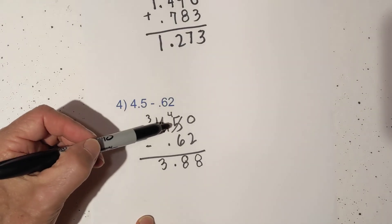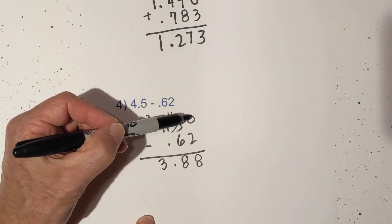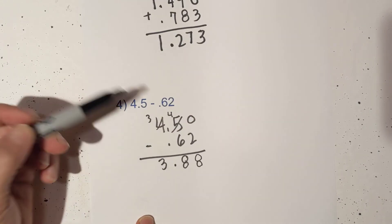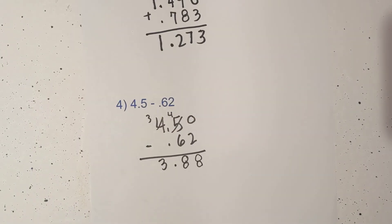So in summary, you line up the decimals, fill in placeholders, subtract, bring down the decimal. Hope that helps. Thanks for watching, and remember, kindness multiplies kindness. Be kind to someone today.